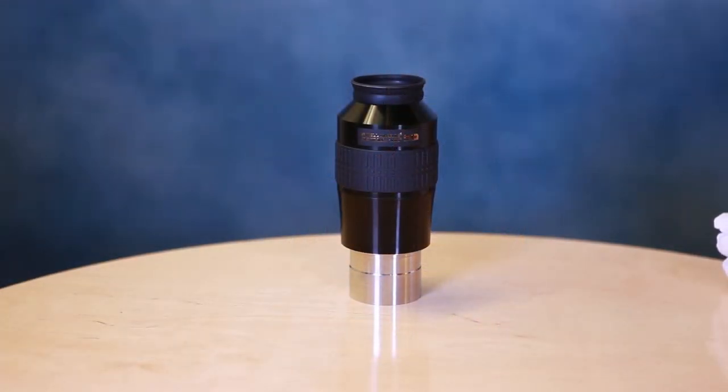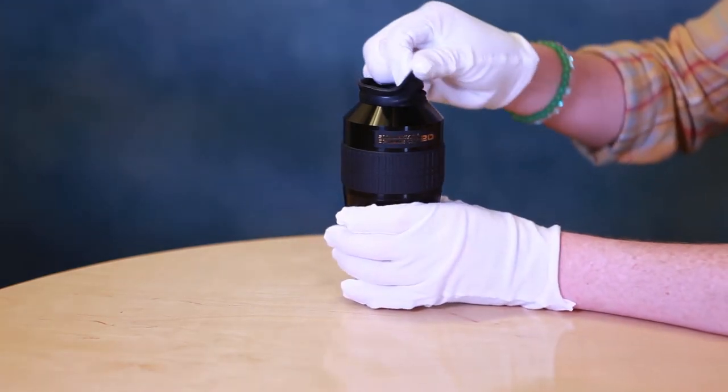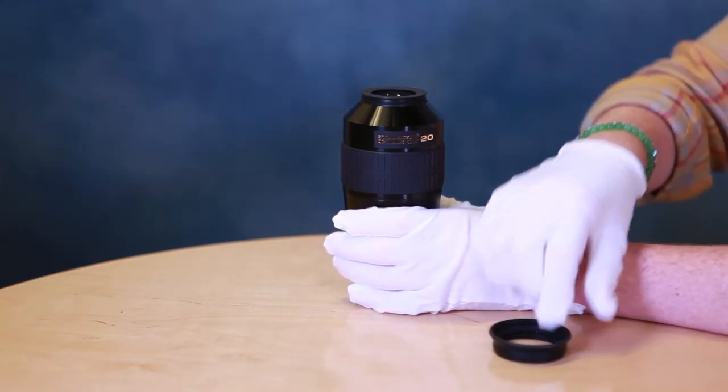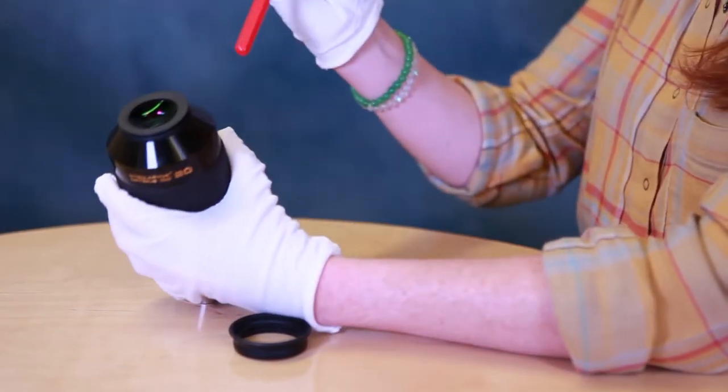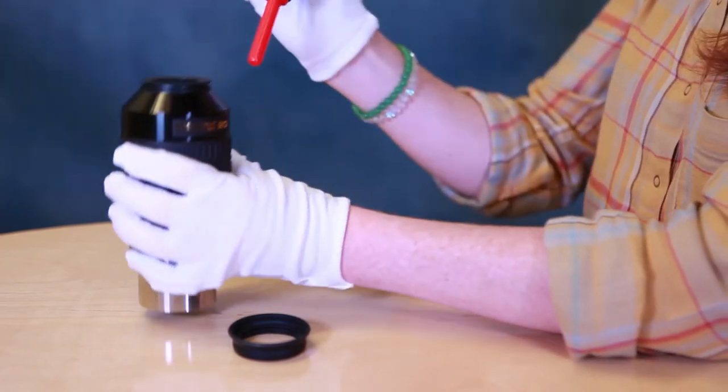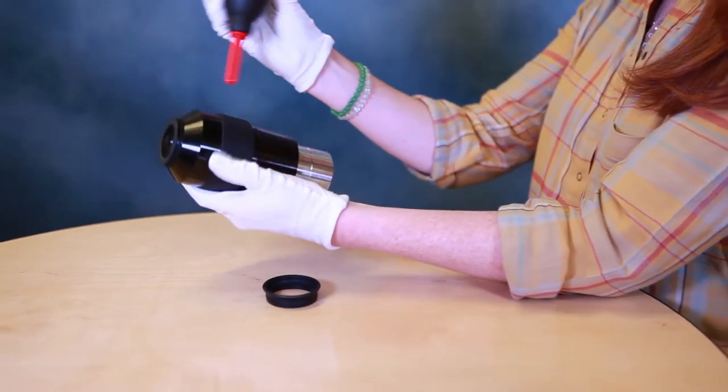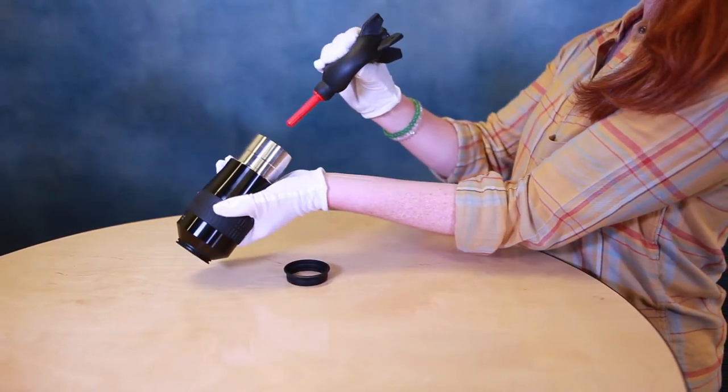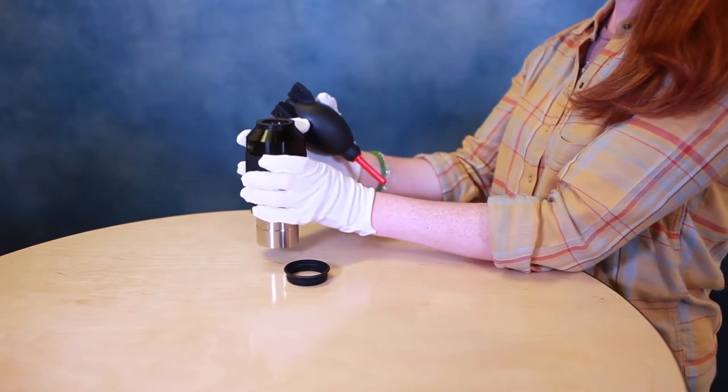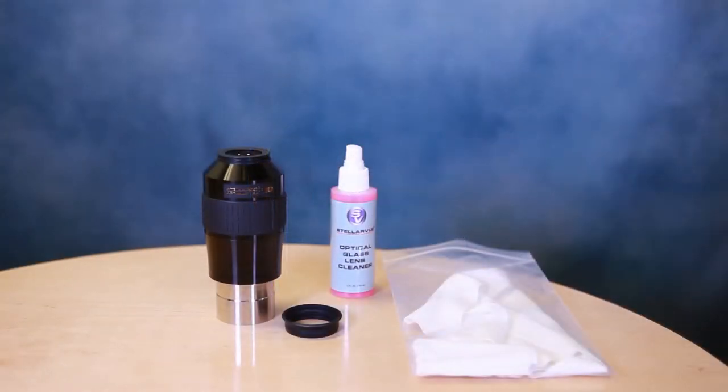Since eyepieces are handled a lot, we feel it's important to start by cleaning the eyepiece's exterior. Most eyepieces have removable eye cups, so remove it first. Then use the bulb blower to remove the loose dust off the exterior of the eyepiece. Get the exterior clean before you attempt to clean the lenses. And while you're at it, blow off the eye cup. You don't want dust and dirt from an eye cup getting onto your freshly cleaned eye lens.